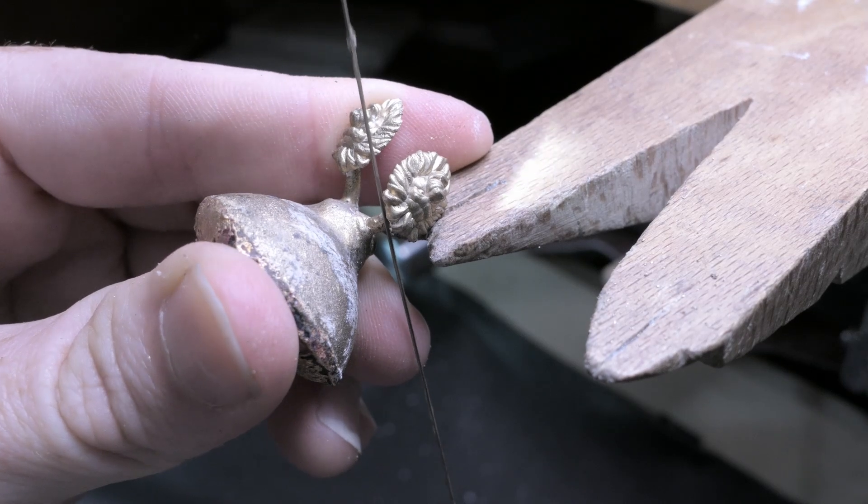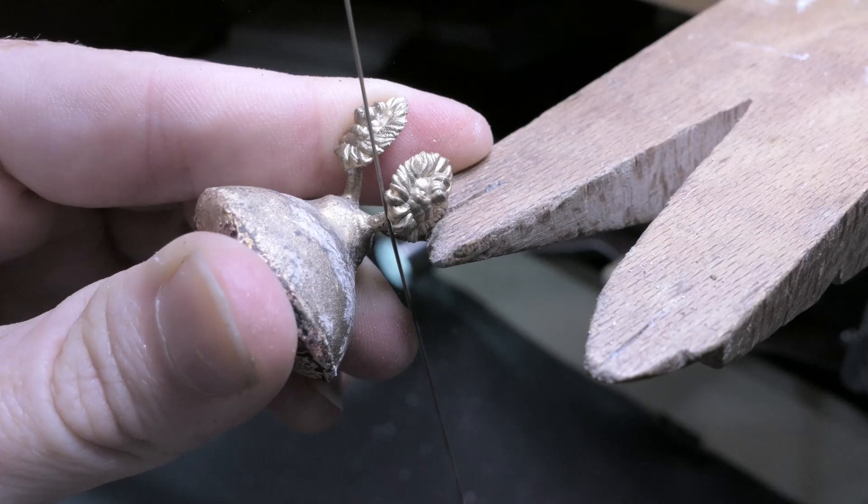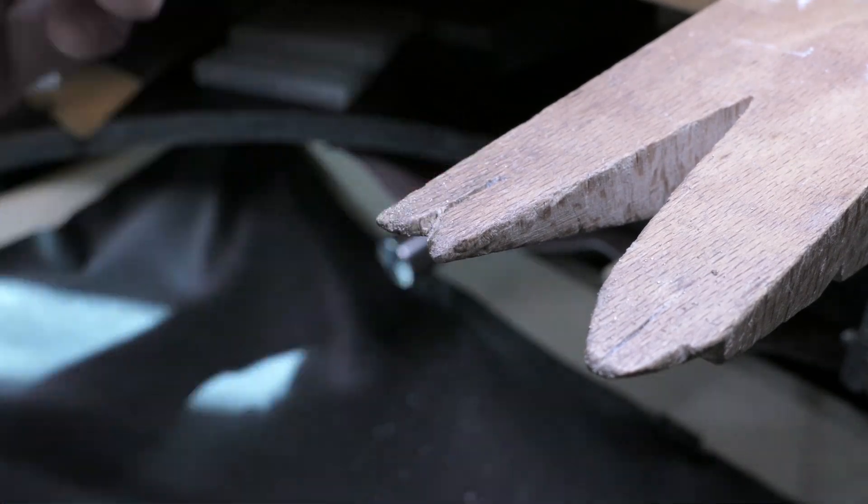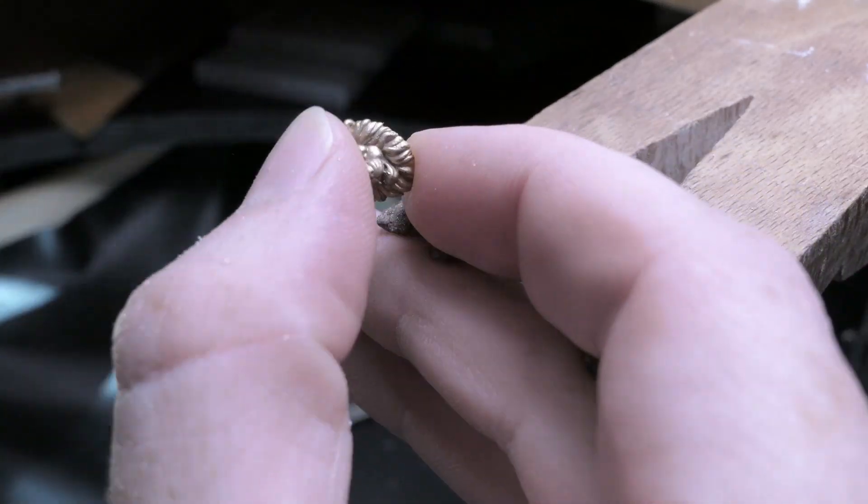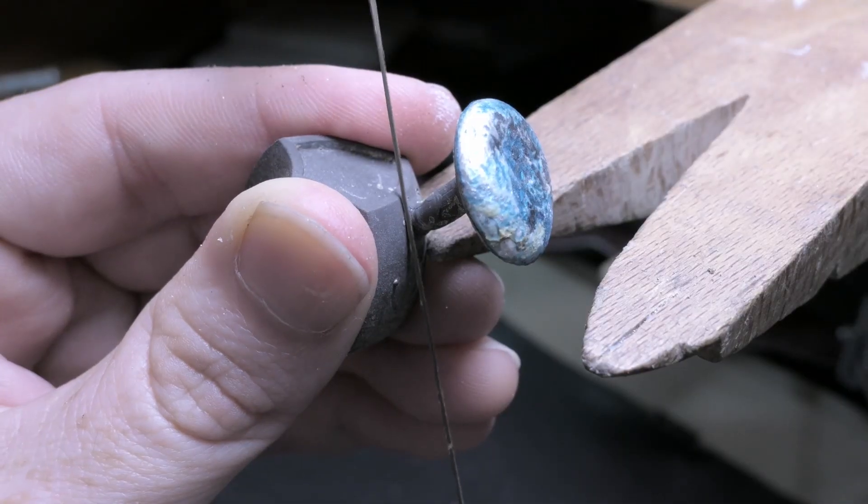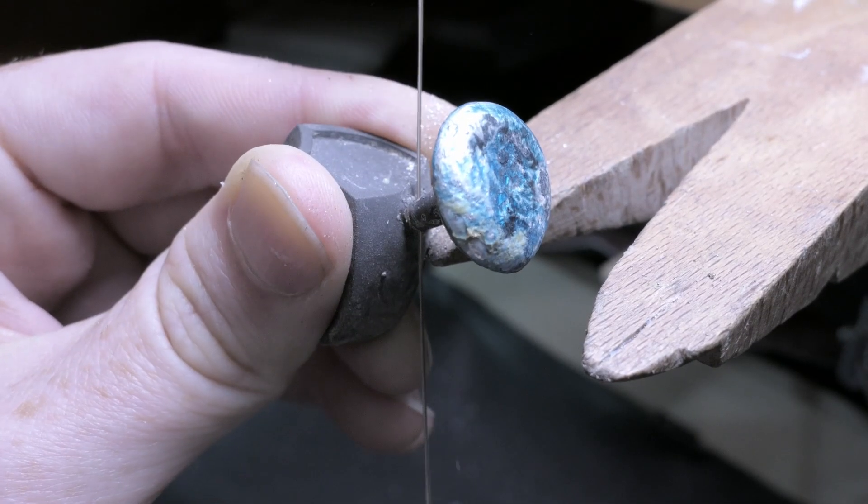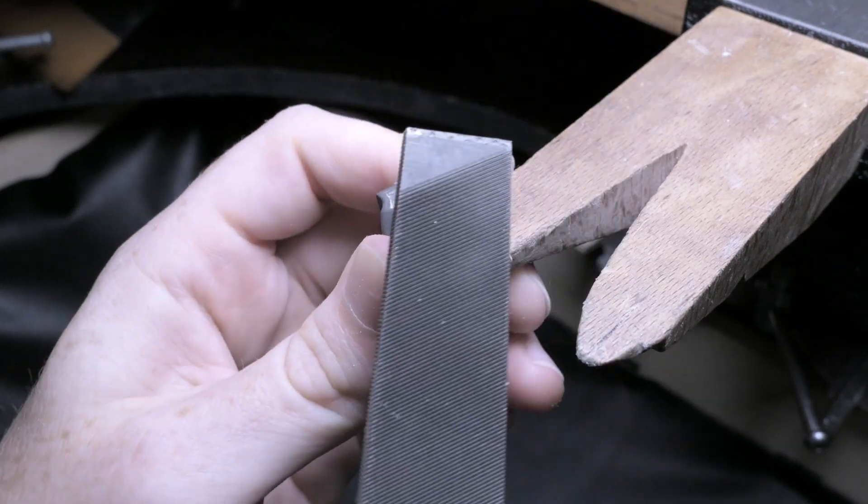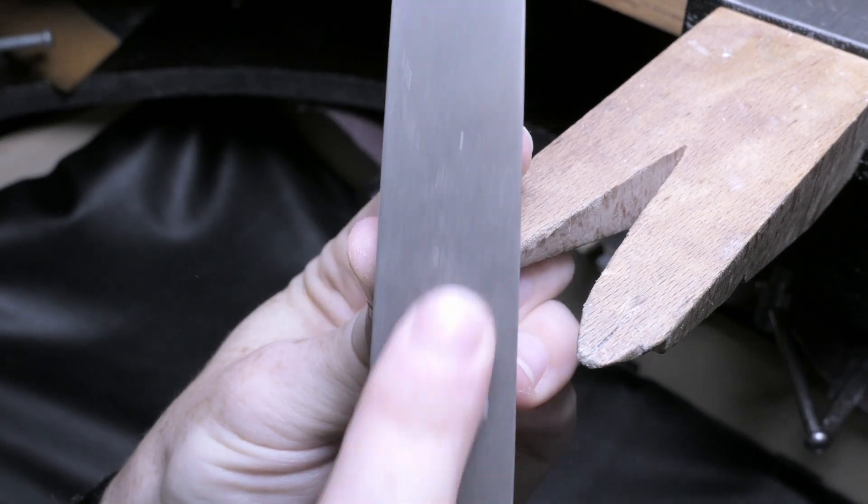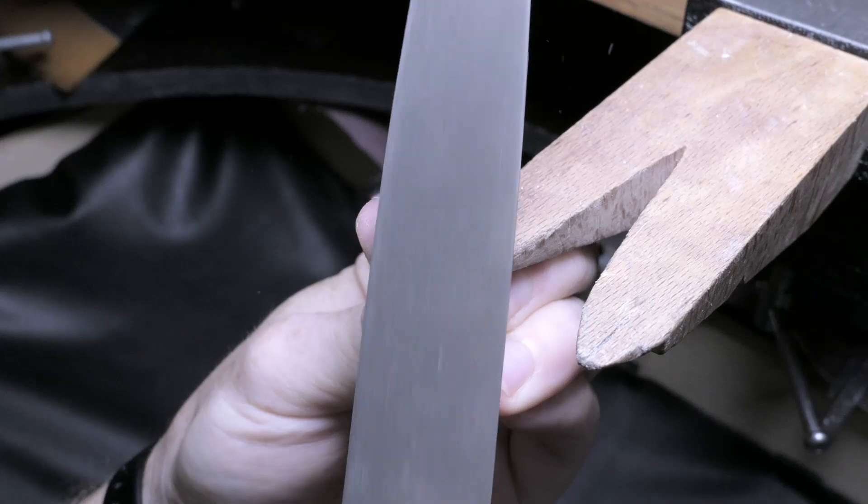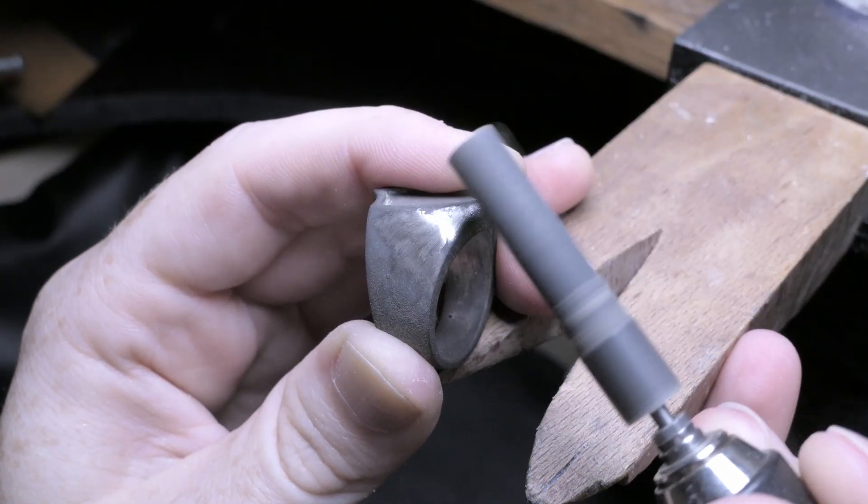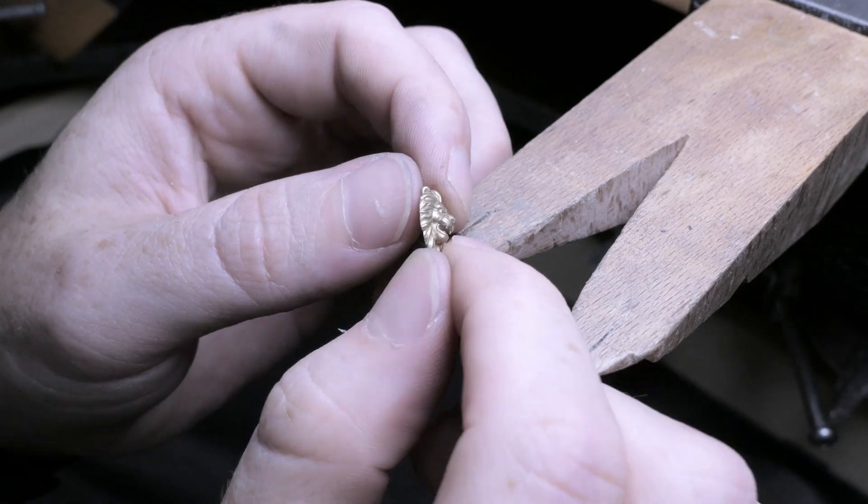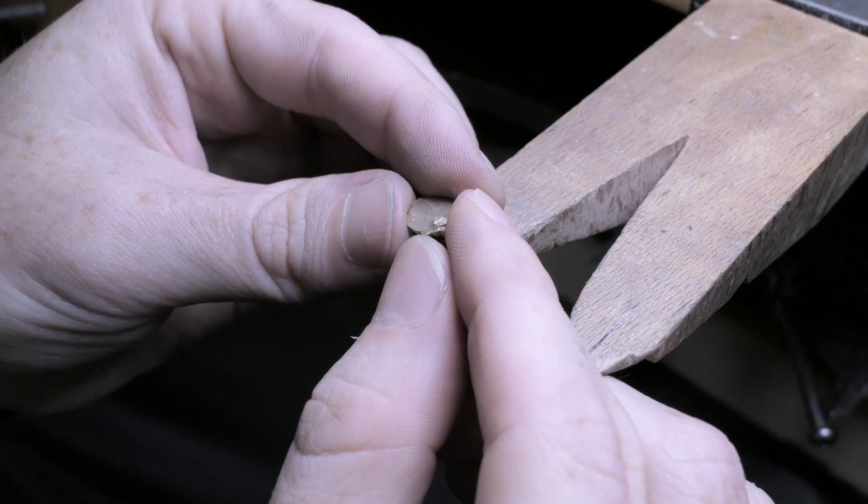So now I'm just going to saw them off using a jeweler saw and get them cleaned up a bit. Now I can get these sprue marks and imperfections cleaned up a bit with a file and some sanding abrasives. And for the back of the lion head, I want this area to be really nice and flat to give me a good surface for soldering to the head of the ring.